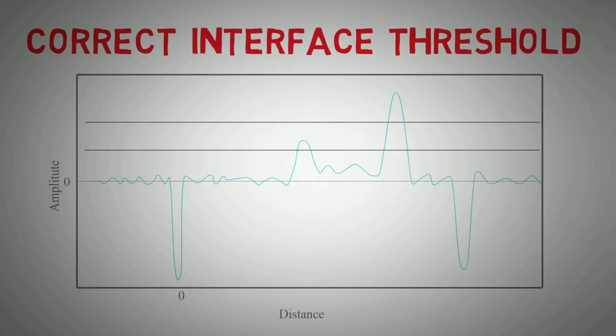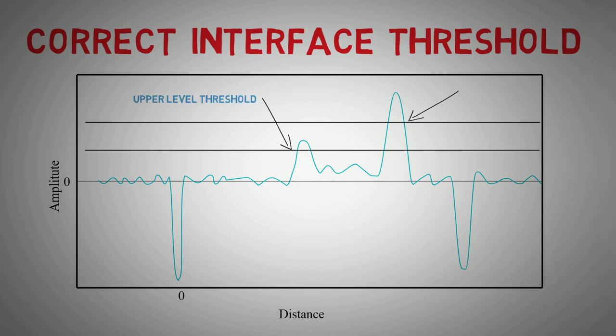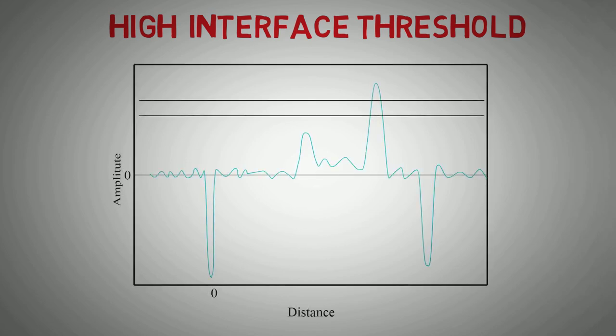Interface level setups require two threshold settings to determine between the two distinct reflections. Here we can see a correctly set threshold for an interface setup. If the threshold is set too high, an interface level may indicate as the upper or bulk level instead of the desired interface reading.